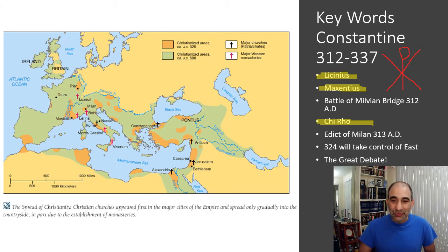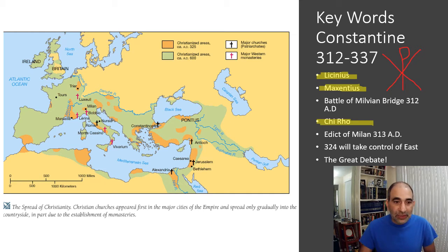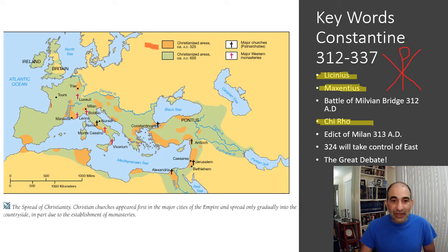Constantine won the Battle of Milvian Bridge. Maxentius was defeated and beheaded. Constantine took control of the West, and by 324 AD he took control of the East as well, becoming the dominant figure in Rome. Looking at a map of Christianity in Rome at this time, the pockets of orange represent Christian areas just before Constantine, while orange and green — basically the whole map — show Christianity's reach over the next couple hundred years.